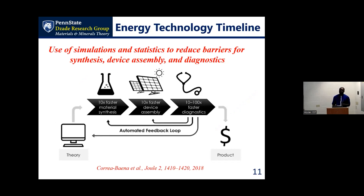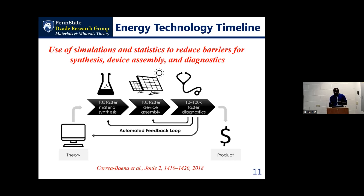The reason we are interested in computation is because every new technology, from initial state to commercialization, can take 50 years. The first solar cells fabricated around the 1950s had an efficiency of 6%. It took several years to reach 21%, 25%, 30% — a span of 40 to 50 years. The question is, as I understand it, we did not have all these computer abilities to diagnose systems and materials back then. Why was it taking so long to move from 6% to 30%?